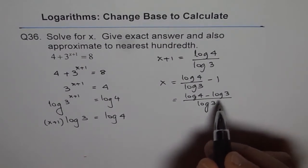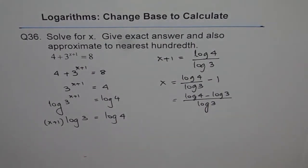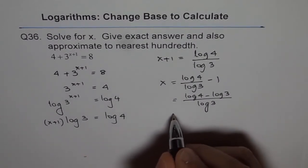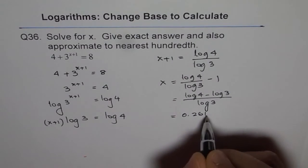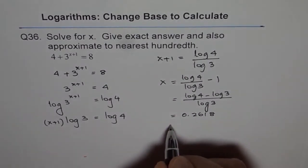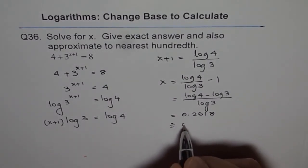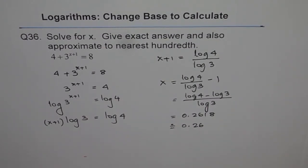Now if you use calculator and plug in the values, you get approximate answer. So I will do log of 4 divided by log of 3 equals to 1.261 minus 1 equals to 0.2618. And this could be rounded to the 100th place which is 0.26.